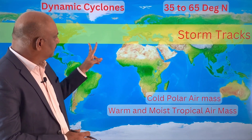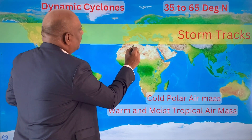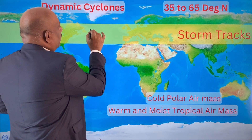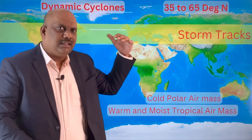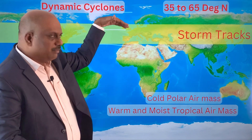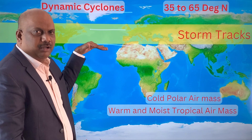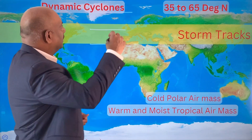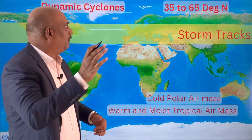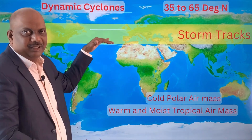We have the subtropical high pressure belt, the subpolar low pressure belt, and the polar high pressure belt. Easterlies move downward from the polar belt, while westerlies move from the subtropical high pressure belt to the subpolar low pressure belt. Dynamic cyclones develop because of the convergence of the cold polar air mass and the warm and moist air mass from the tropics.